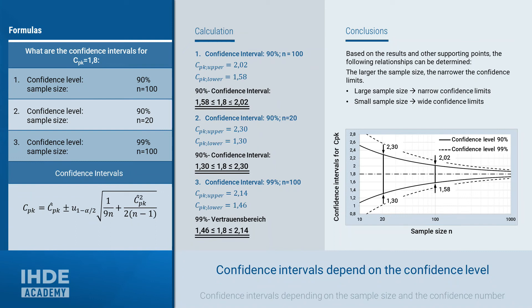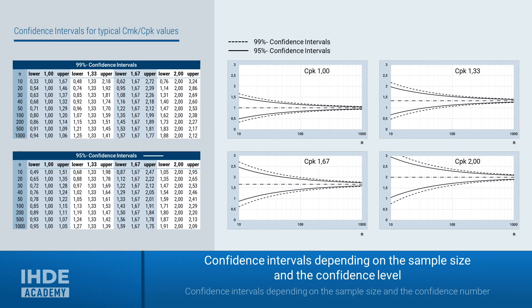This is intuitive: if you want to increase the probability that a value can be found in a certain range, the width of that range must be increased. Typical requirements for critical process capability indexes are values of 1, 1.33, 1.67, and 2. Common confidence levels are 95% and 99%. The confidence intervals for these are shown as a function of sample size, both in tabular form and graphically. Now would be a good time to pause the video to take a closer look at these relationships.